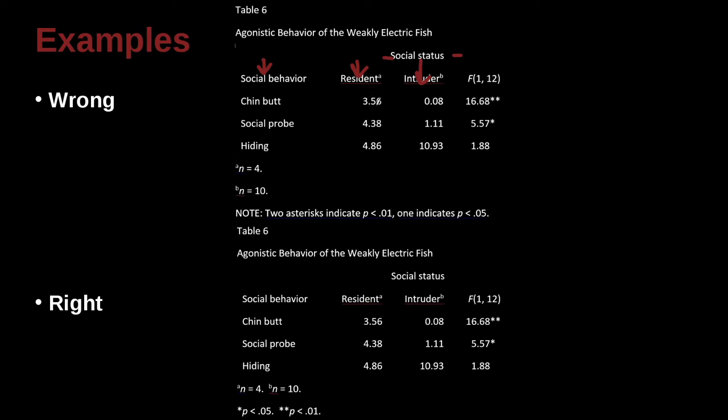Social behavior is the column heading here, and we've got these behaviors that the fish undergoes. And then we've got our numbers in here. How are they looking? Two decimal places. They all have two decimal places. That looks good. We've got some asterisks here, which is going to be our probability note, right? Ah, so here we can begin to see the example has a problem.